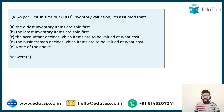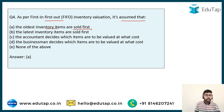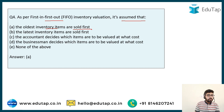We can now easily answer the FIFO question. As per First In First Out (FIFO) inventory valuation, it is assumed that the oldest inventory items are sold first — the earliest to arrive are sold first. The answer is option A.